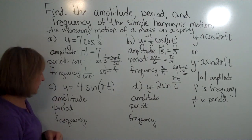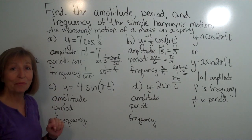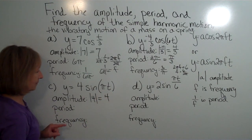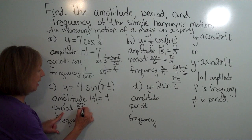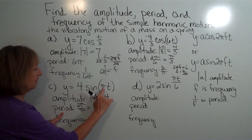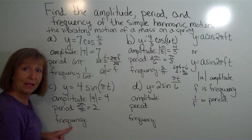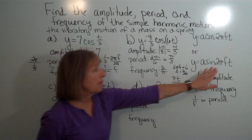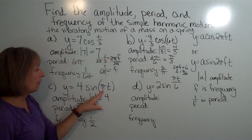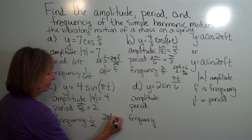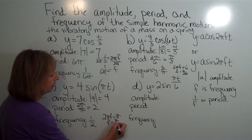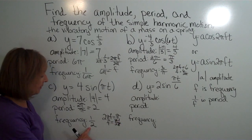Moving on to part c: the amplitude is the absolute value of 4, which is 4. The period is 2 pi divided by pi — the original period of sine divided by the coefficient of the angle — which gives us 2. So the frequency is one-half. Alternatively, setting 2 pi f equal to pi and dividing both sides by 2 pi gives f equals pi over 2 pi. The common factors of pi cancel, leaving 1 over 2, which is one-half.